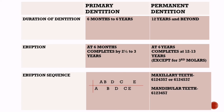The eruption sequence of primary dentition is ABDCE, which means first the incisors erupt, followed by the first molar, then the canines, and at last the second molar. In permanent dentition, in maxillary teeth, first the first molar erupts, followed by incisors, then the first premolar; after that, either the canine or second premolar erupts, and at last the second molar followed by the third molar. In mandibular teeth, the first molar erupts first, followed by incisors and canines, then the first and second premolars, and at last the second molar followed by the third molar.